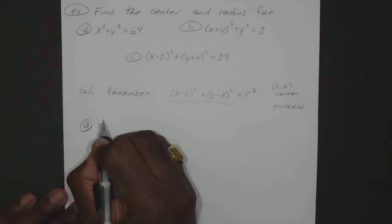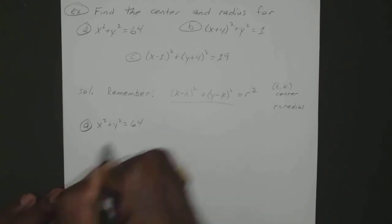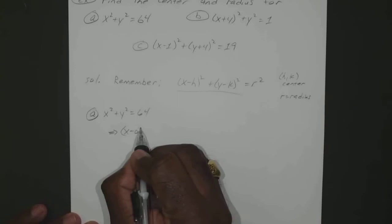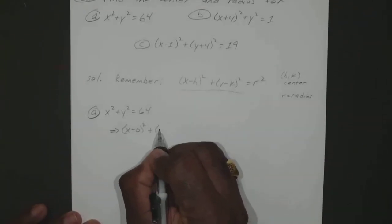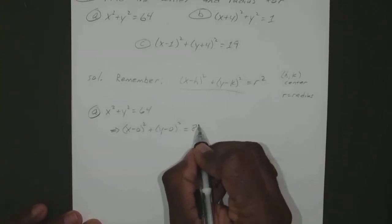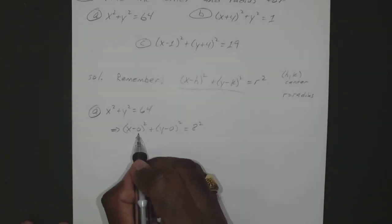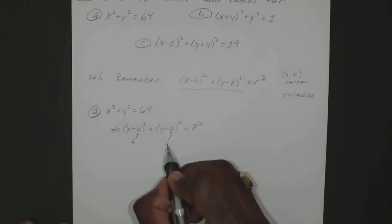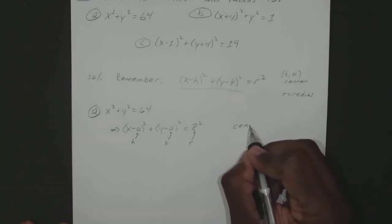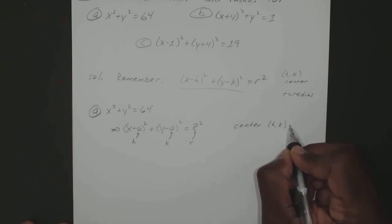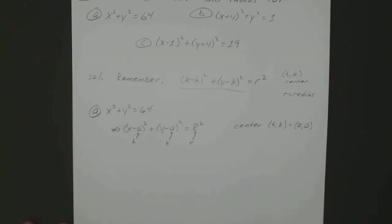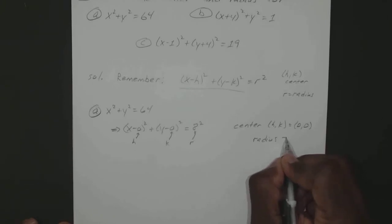So for problem a, if you have x squared plus y squared equals 64, we can just make that x minus 0 squared plus y minus 0 squared equals 8 squared. Where this is your h, this is your k, and this is your r. So your center, which is h, k, is 0, 0, and your radius is equal to 8.